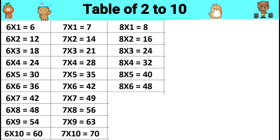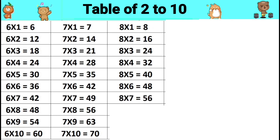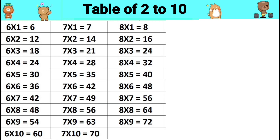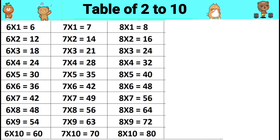Eight sixes are forty-eight. Eight sevens are fifty-six. Eight eights are sixty-four. Eight nines are seventy-two. Eight tens are eighty.